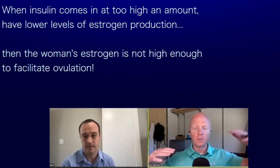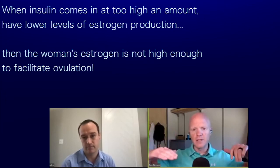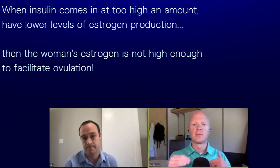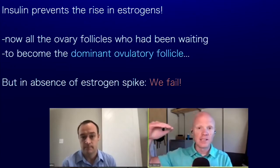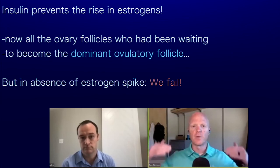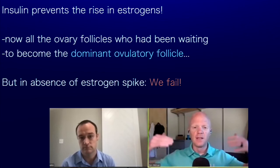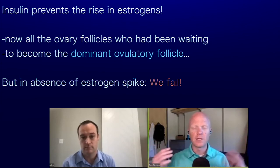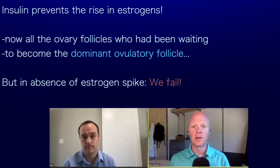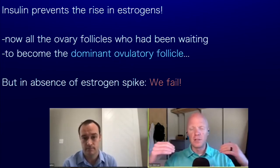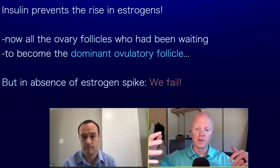Now the woman doesn't have enough estrogens to facilitate ovulation. Insulin prevents this rise in estrogens, and we have all these follicles in the ovaries that were developing, waiting for one to become the dominant ovulatory follicle. But in the absence of this estrogen spike, we fail to have that one follicle become dominant and ultimately ovulatory.